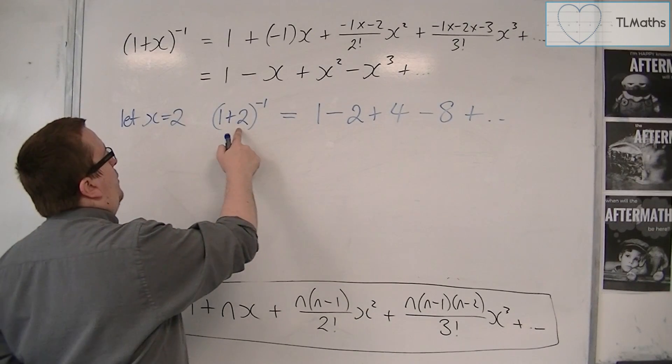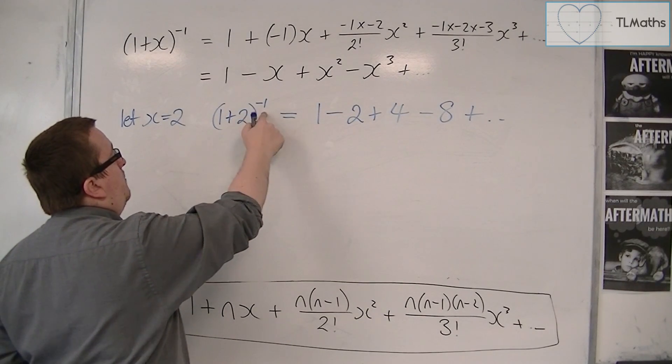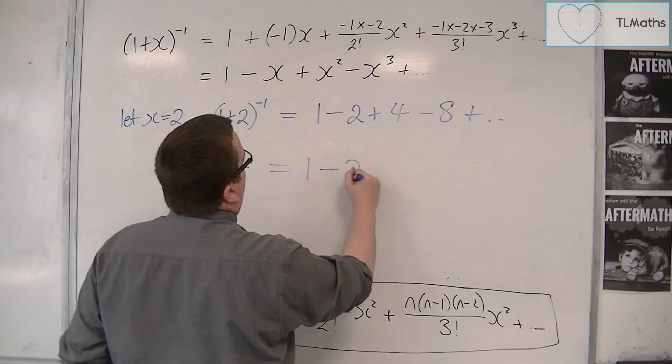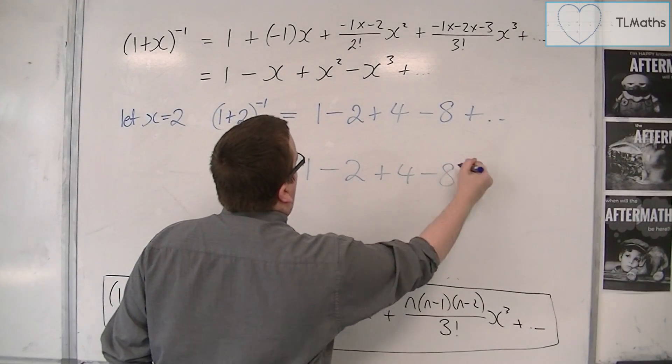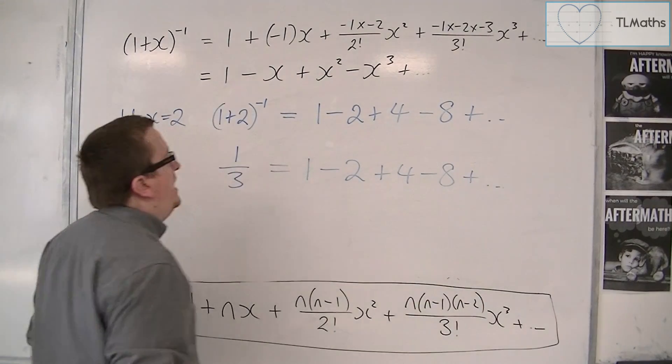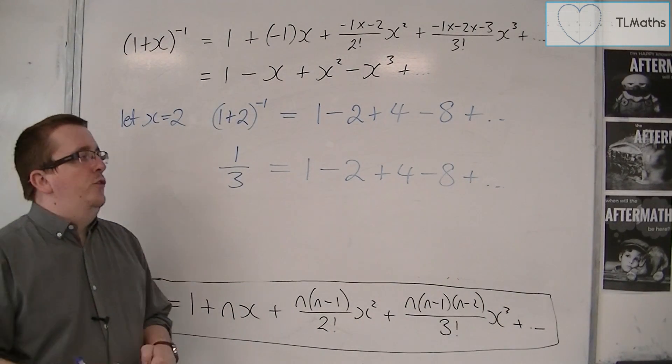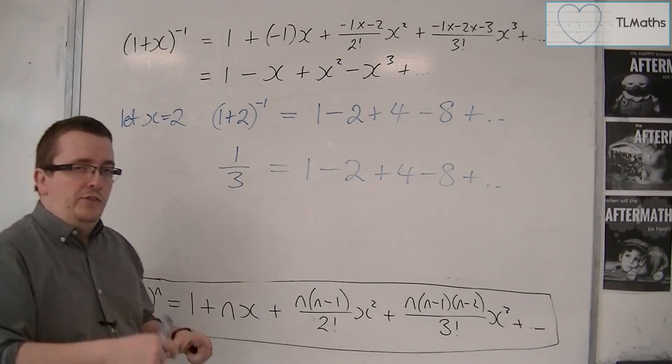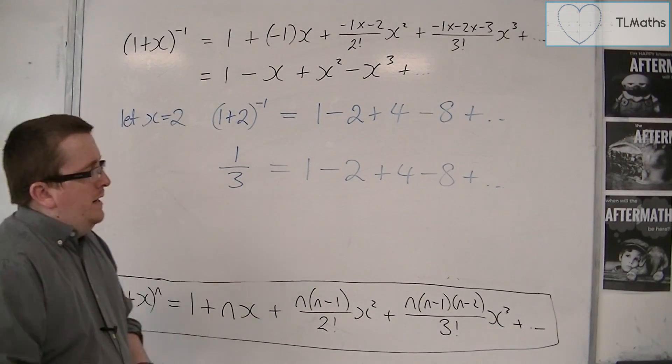So 1 plus 2 is 3. 3 to the minus 1, well, that's just 1 third. So, what we're saying is that 1 third is the same as 1 minus 2 plus 4 minus 8 plus 16 minus 32, and so on and so forth. Does that make sense?